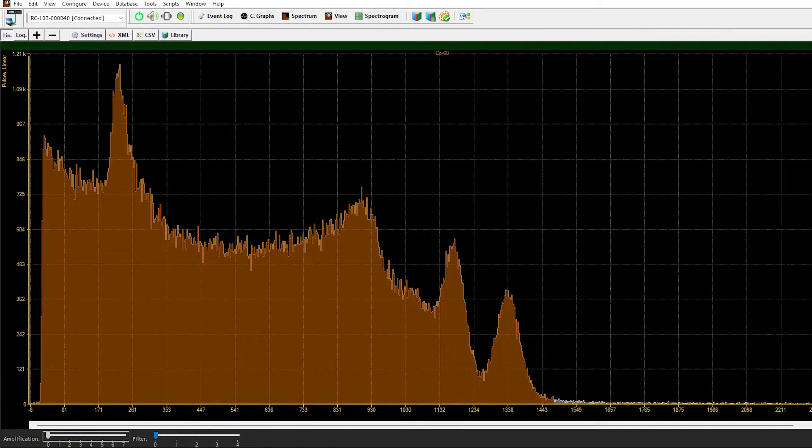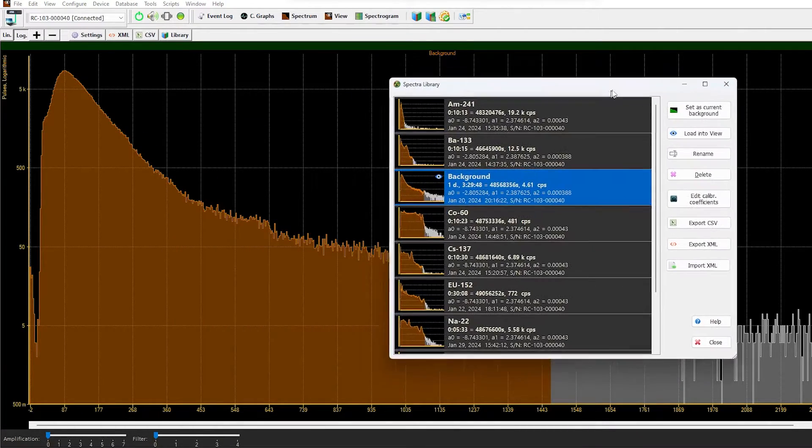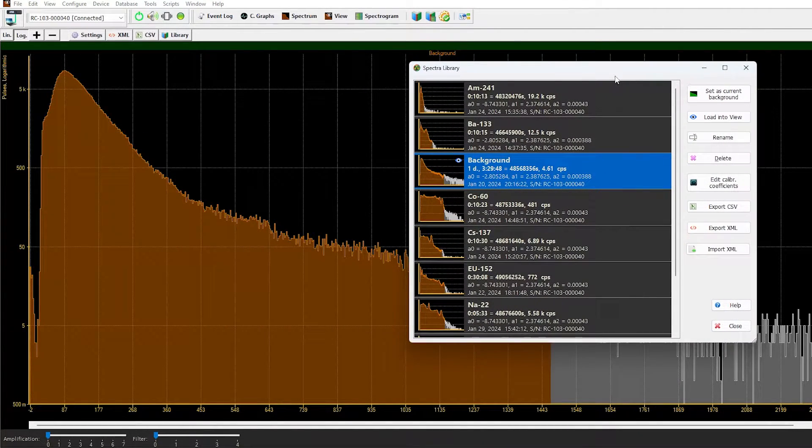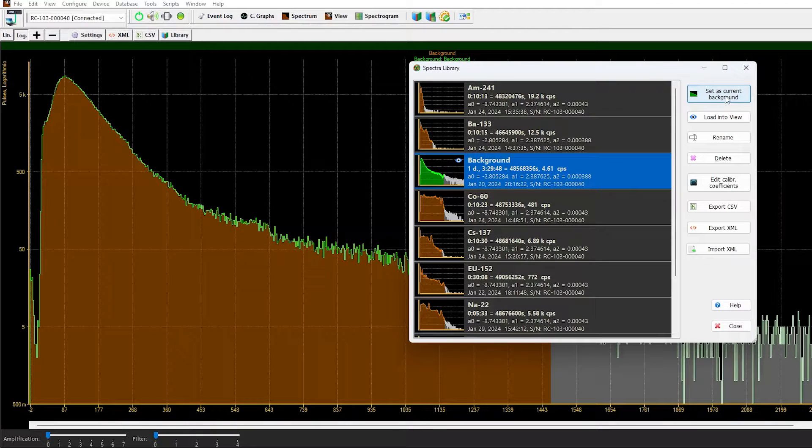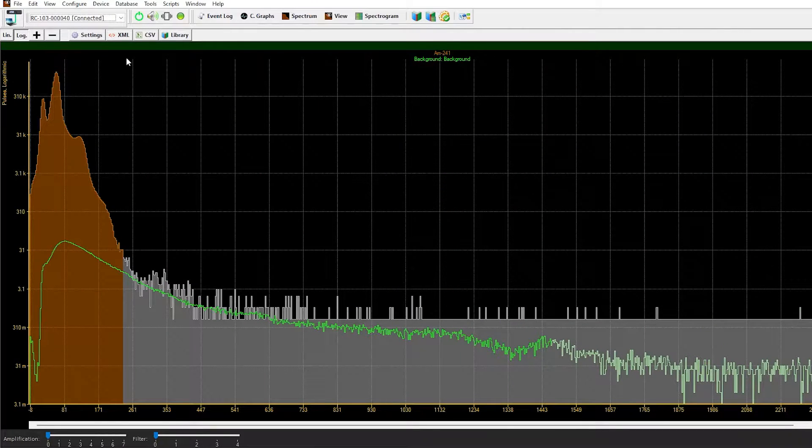Here I have the cobalt-60 with its two high energy peaks. And what you can also do is you can take a very long background spectrum, go to library and choose it as a background spectrum. In this case, the counts are compensated for the longer collecting time and will be overlaid over another sample, for example, here with the americium-241.